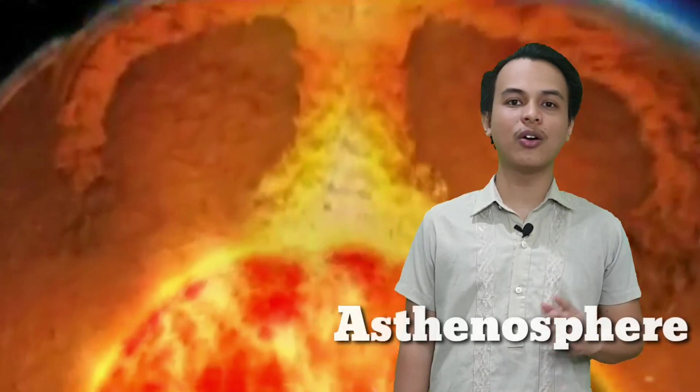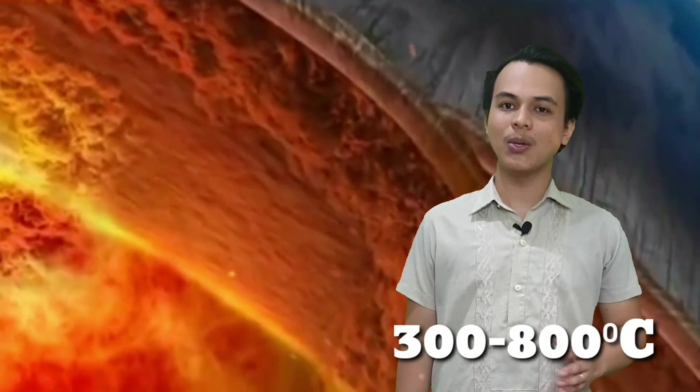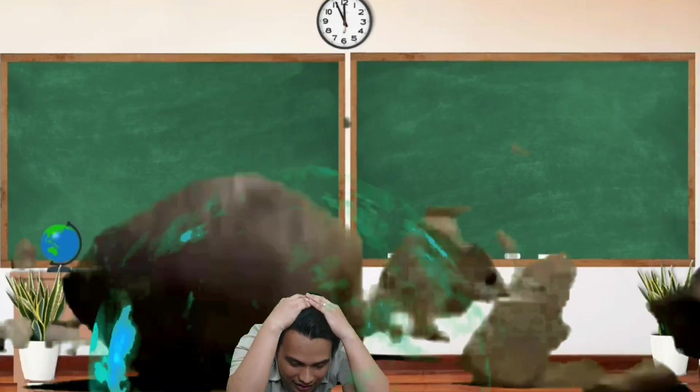Sa mantle natin makikita ang layer na tinatawag na asthenosphere or the low velocity zone. It is a soft, weak, top layer of the upper mantle that is made up of hot molten materials. It has a thickness of 180 kilometers at may temperature ranging from 300 degree Celsius to 800 degree Celsius. Since ang asthenosphere ay molten and flowing underneath the crust, it causes the movements of lithospheric plates. Na siya namang nagiging dahilan ng paggalaw ng mga continents. Kaya tayo mayroong earth waves.